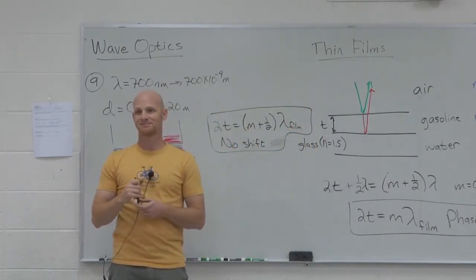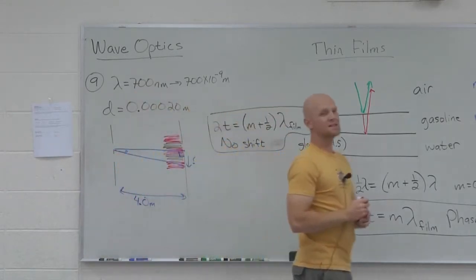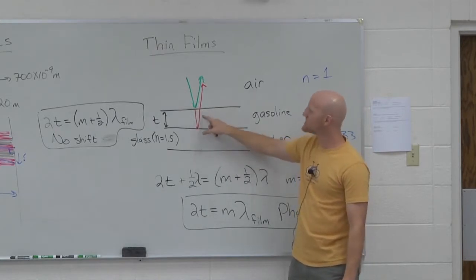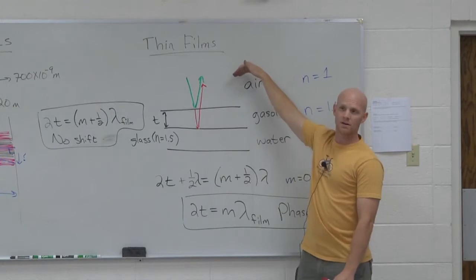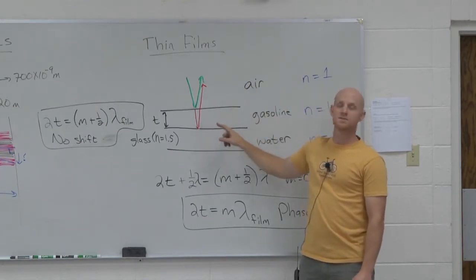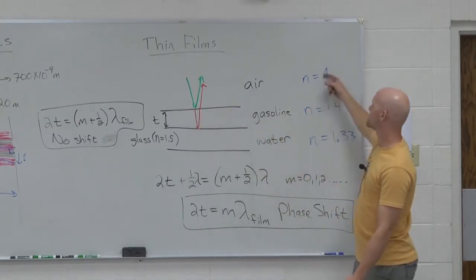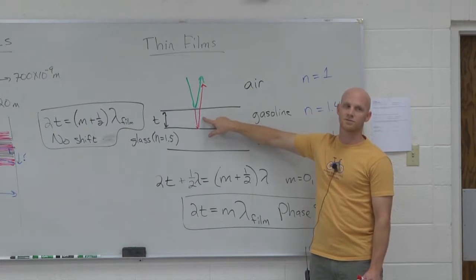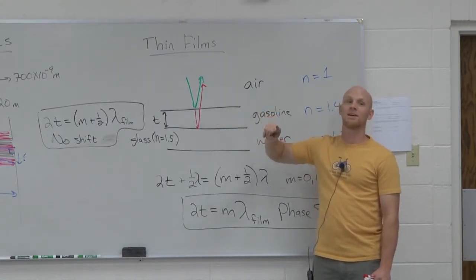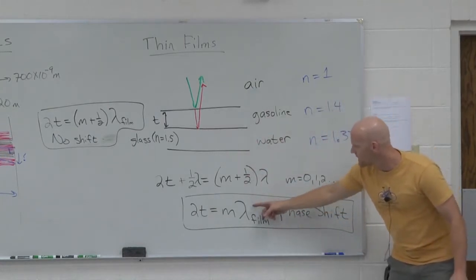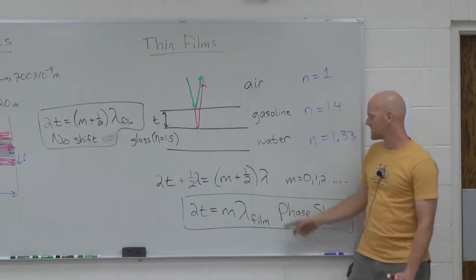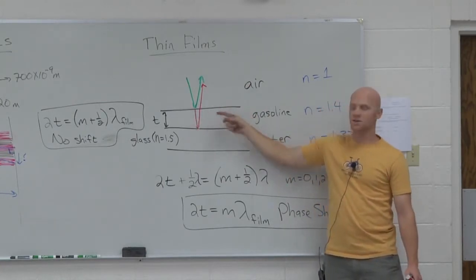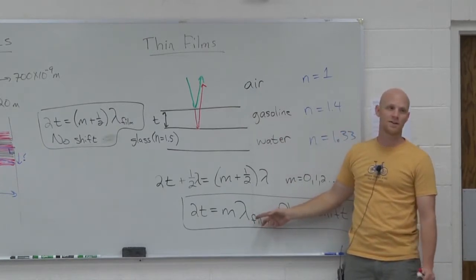Can I muddy the water a little more? Here's the thing: does light travel the same speed in all these media? No. The extra distance of 2t is being traveled inside the gasoline — not at the speed of light in air. In gasoline, with a higher index of refraction, light travels slower. That won't change its frequency, but it will change its wavelength. So we need to use the wavelength inside that particular film, not the wavelength in vacuum or in air.